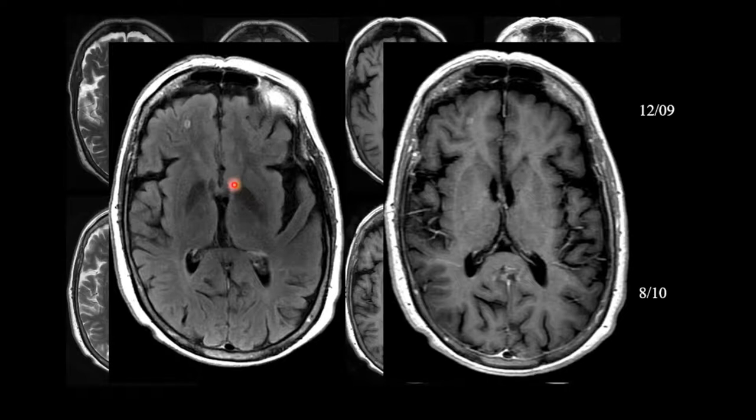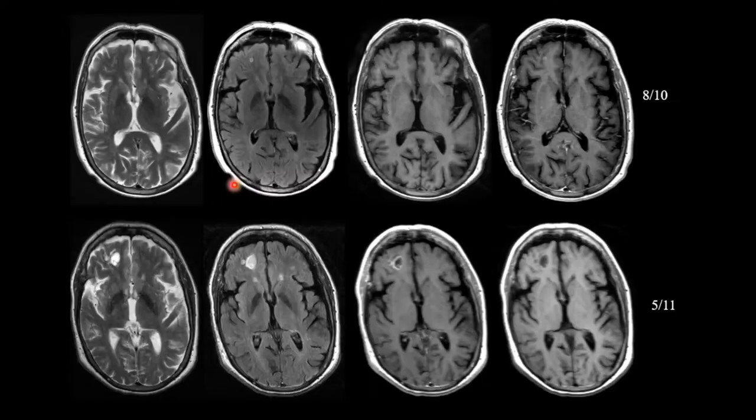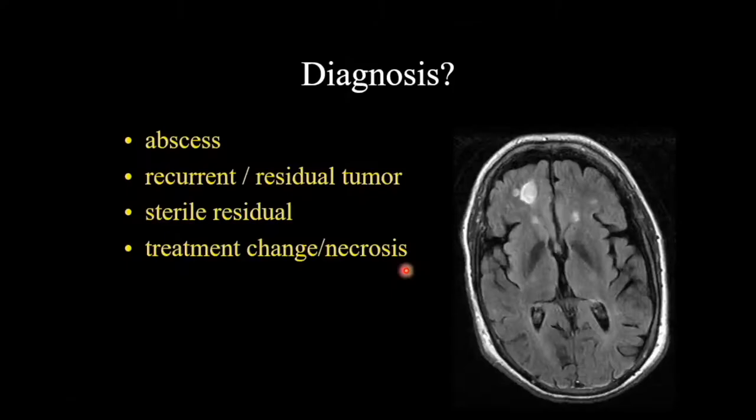We have no trouble determining this is a metastasis. The patient was treated and came back roughly six months later. Here's the initial lesion, and here's the follow-up — it's bigger, and there's a second ring-enhancing lesion. So now, what do we think? Is this an abscess related to treatment? Is it a sterile tumor residual? Is this treatment change and of no concern? Or is this an area of recurrent residual tumor?